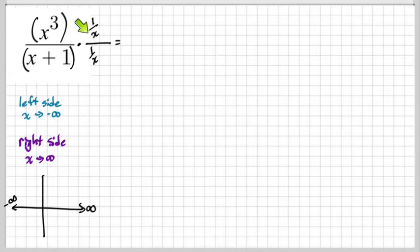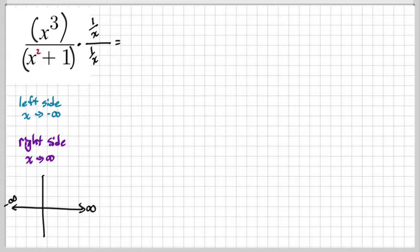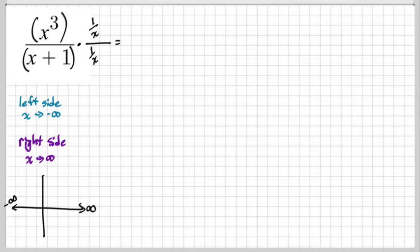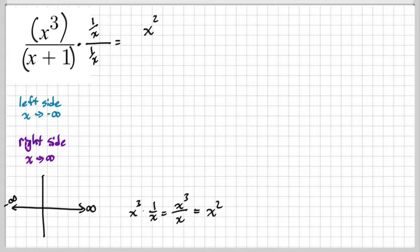Why one over x? It's always going to be one over something, and the bottom is always going to be x to a certain power. This is x to the first power, and the reason I know that is because that's the highest degree on the denominator. So if I had a degree of two, you would use one over x squared. Now, do you know what you get when you go x to the third times one over x? We get x squared — x to the third over x simplifies to x squared.